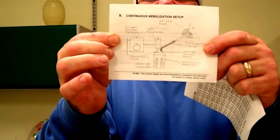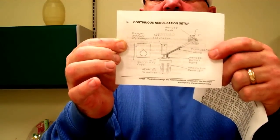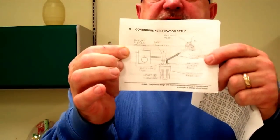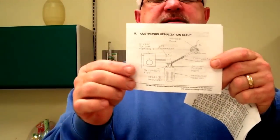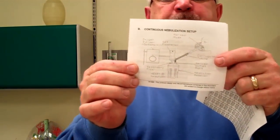It also tells you that you can set it up for 10 liters per minute to give an output of 30 milliliters per hour, or you can set it at a flow of 15 liters per minute on the flow meter to give you an output of 50 milliliters per hour. So based on what you set your flow meter at, that's going to determine how fast or what is the output of the device.